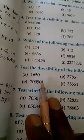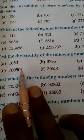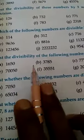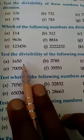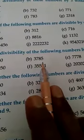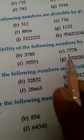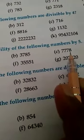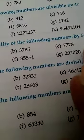Now question number 6: test the divisibility of the following numbers by 5. The divisibility rule of 5 is very simple — check the ones place. If the ones place is 0 or 5, then the number is divisible by 5. So A: 1650 is divisible by 5 because the ones place is 0. 3785 is divisible by 5 because the ones place is 5. C: 1778 is not divisible by 5 because the ones place is neither 5 nor 0.